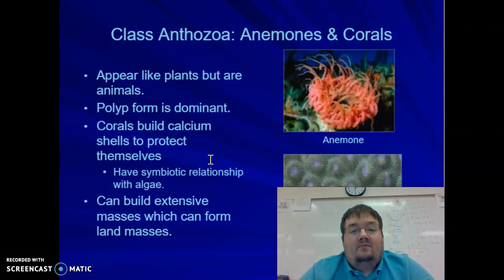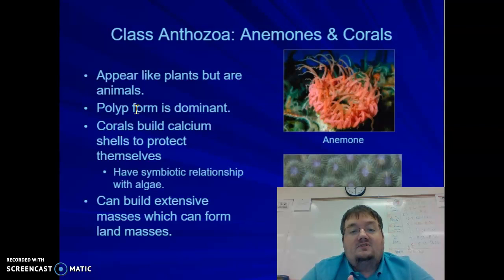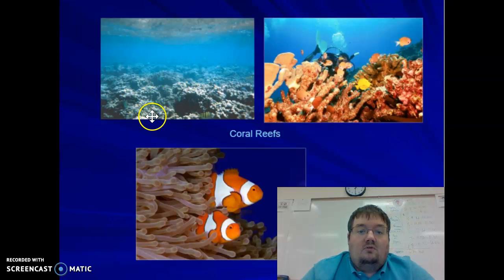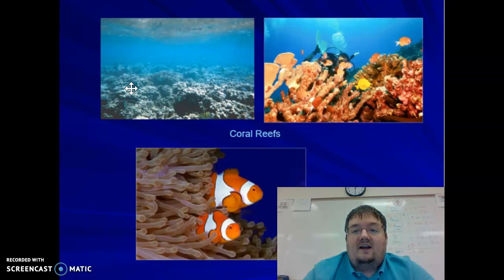Coral have calcium shells for protection instead, and they can build extensive masses that can even form land masses and host many environments for ocean organisms. If you look at how massive some of those coral reefs are, remember these are all animals — it's pretty amazing how much terrain and habitat coral provides for ocean dwellers, being an animal itself. And that's it for cnidaria. Feel free to go back and look over some of the slides. Thanks, guys.